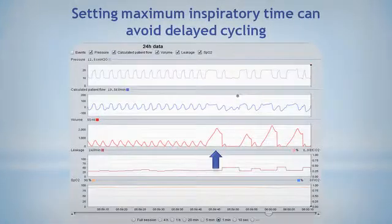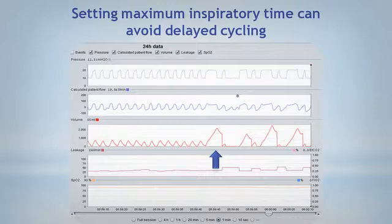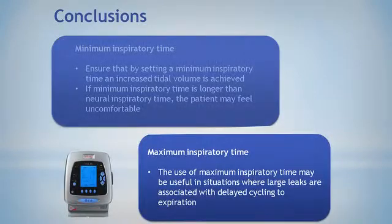For example, in this record, you may appreciate that in the first half the breathing pattern is regular. After the cycle indicated with an arrow, the breathing pattern becomes non-regular with ineffective breaths. The marked cycle has a delayed end and a flatter slope in the flow-time curve, suggesting the presence of leaks. In this case, we could avoid this delayed cycling by setting an appropriate maximum inspiratory time. In conclusion, the use of a maximum inspiratory time may be useful in clinical situations in which large leaks are associated with delayed cycling to expiration.